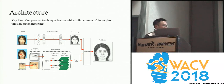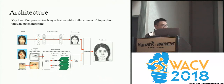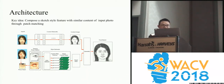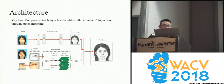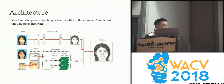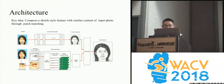Based on this motivation, we propose an architecture shown in the slides. The key idea is to compose a sketch style feature with similar content to the input photo through feature-level patch matching. First, we train a content network which can generate a smooth sketch. Then we perform photo-level patch matching with a training photo-sketch database, generate patch-level features using the best matching sketch patches, and compose these features to form the reference style feature, which is used with the style transfer approach to generate the final result.